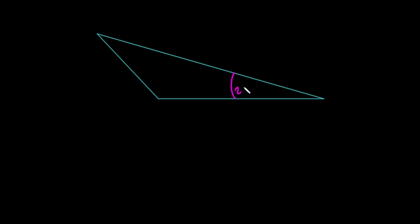Let's look at an example. We're given this angle here of 25 degrees, and the two lengths that generate this angle: 15 and 23. We know we can use the cosine rule because we're given two lengths and the angle in between. From that information we can find the length opposite this angle, which we'll call a.